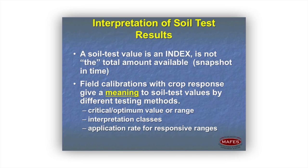A soil test value is what is potentially available at the time you took the soil sample. Field calibrations with crop response give meaning to a soil test value. If you have a soil test value that calls for a recommendation and it's not calibrated to crop response, it's just a number on a piece of paper. The critical value separates those sites that respond to fertilizer positively versus those that are not responsive.